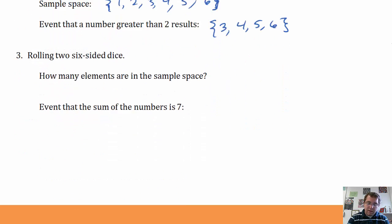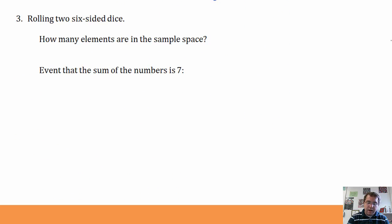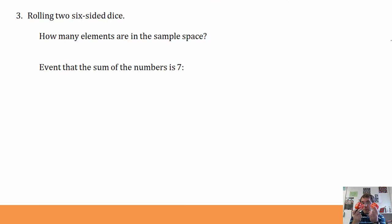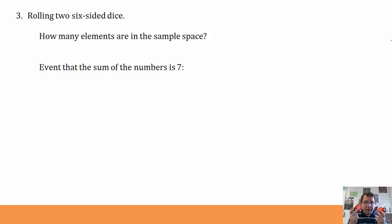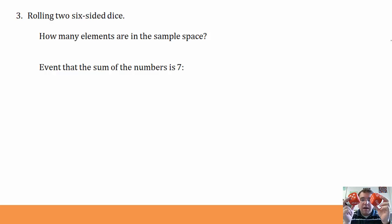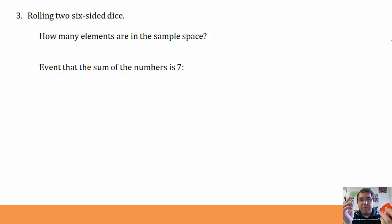Let's say that I take two six-sided dice. When it's plural, it's dice. When it's one, it's die. But if I take two six-sided dice, how many elements are going to be in that sample space?